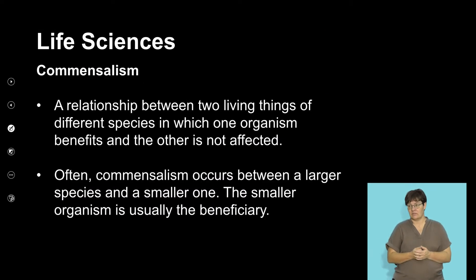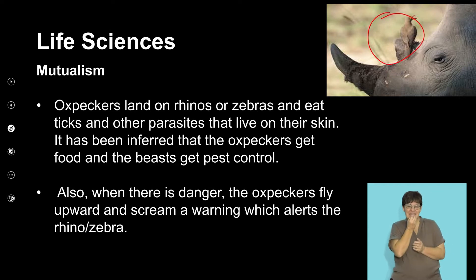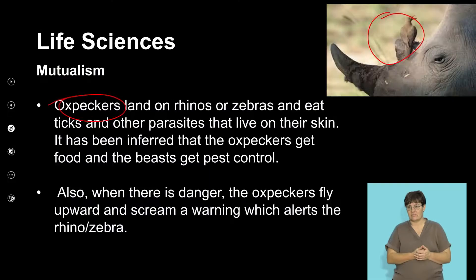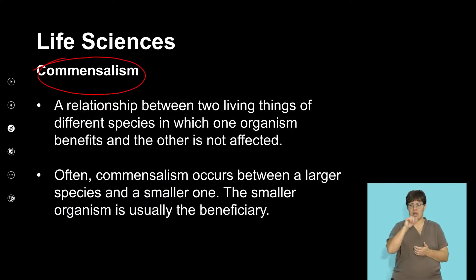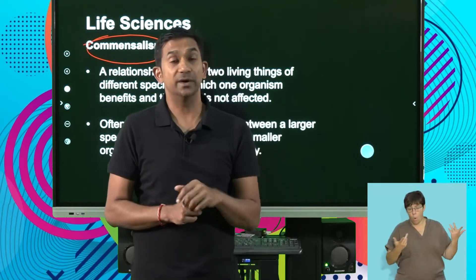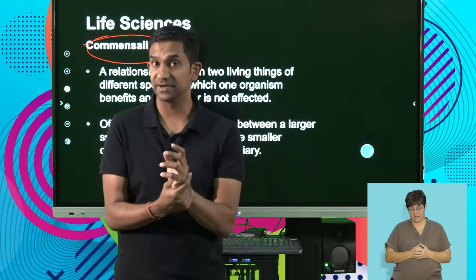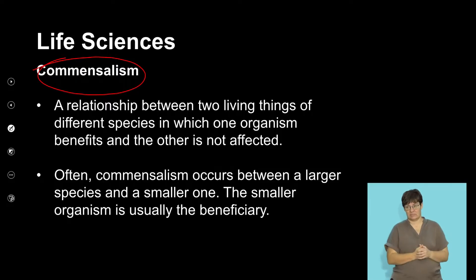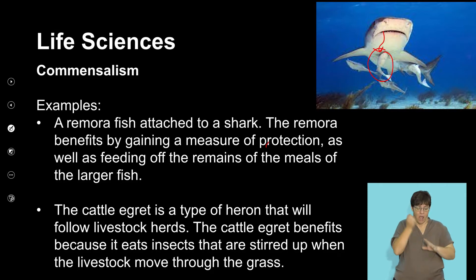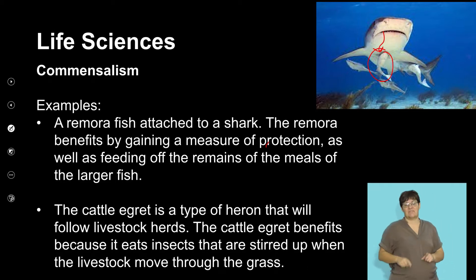Mutualism is where both organisms benefit. Oxpeckers on rhinos play an important role in cleaning fleas and pests from them, giving the rhino relief, while the oxpecker also benefits from that. We also have a relationship called commensalism — a relationship between two living organisms where one benefits while the other neither benefits nor is harmed. We see this with the remora sucker fish, which sticks against a shark, and as the shark feeds, bits of food are consumed by the remora. The shark is not affected in any way but the remora certainly benefits from that association.